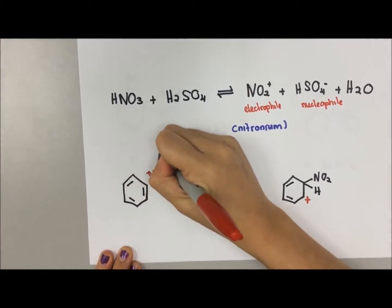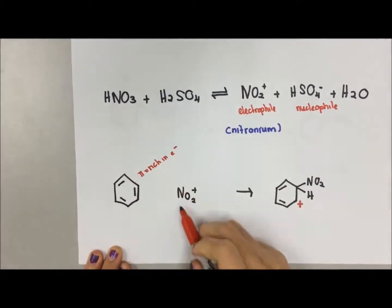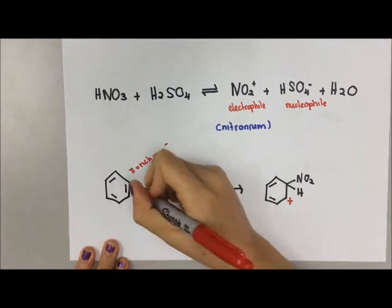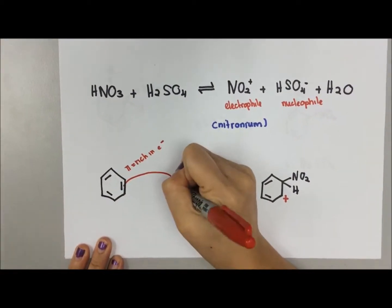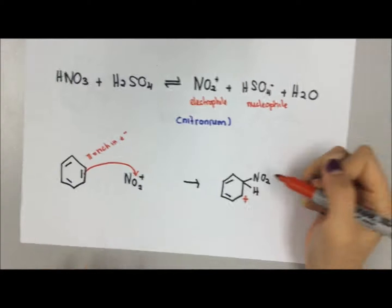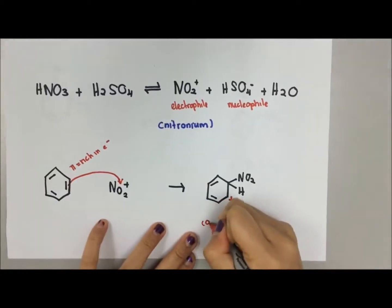So we have an electrophile here, so the double bond will donate electrons to our electrophile, forming a carbon cation here.